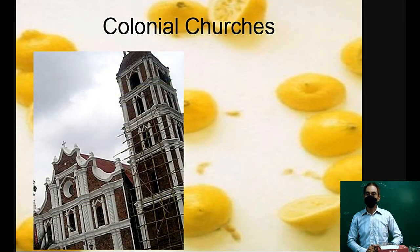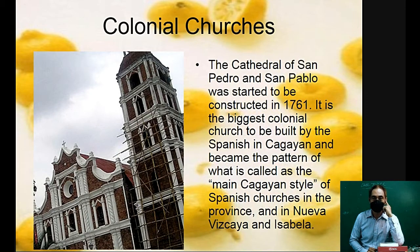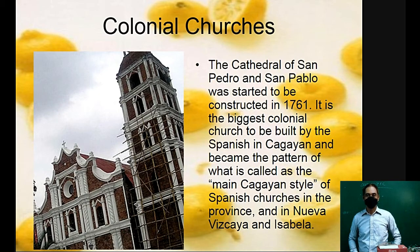Still on colonial churches in the Philippines — the Cathedral of San Pedro and San Pablo was started to be constructed in 1761. It is the biggest colonial church built by the Spanish in Cagayan and became the pattern of what is called the main Cagayan style.